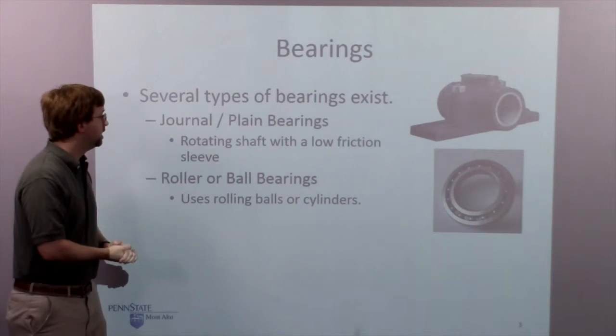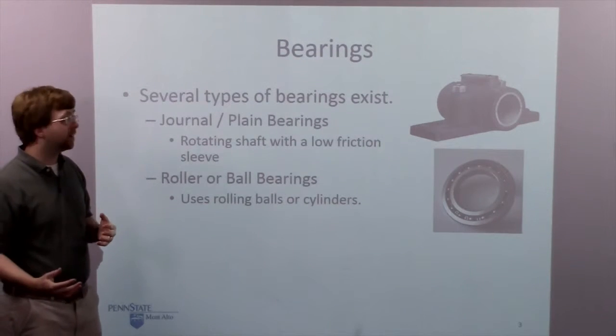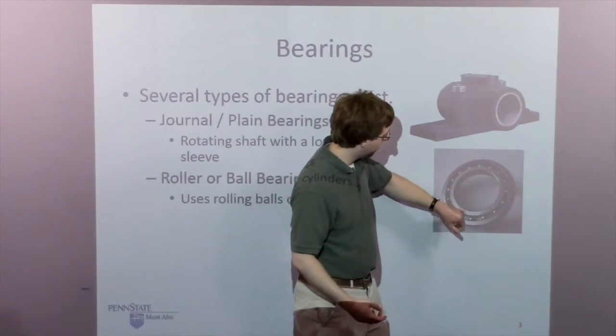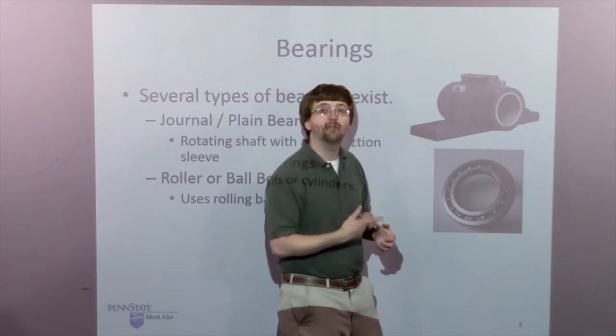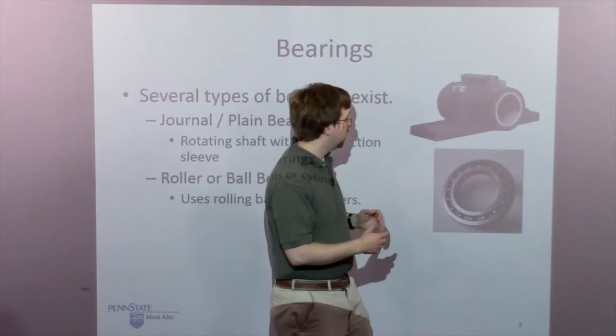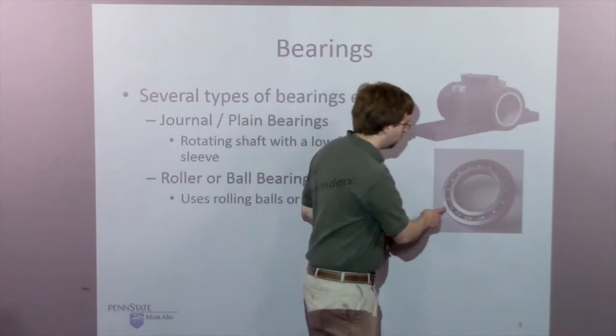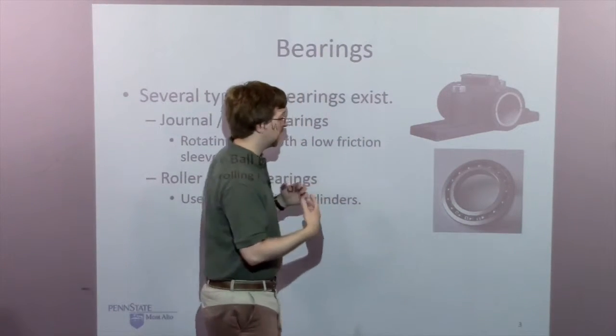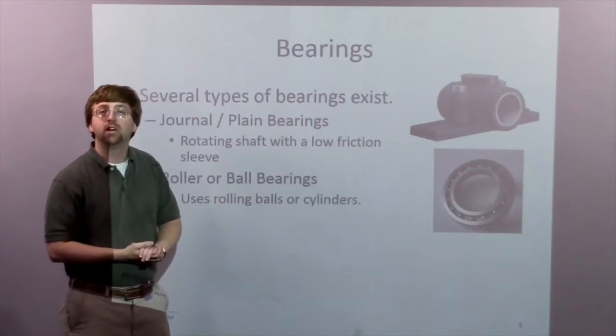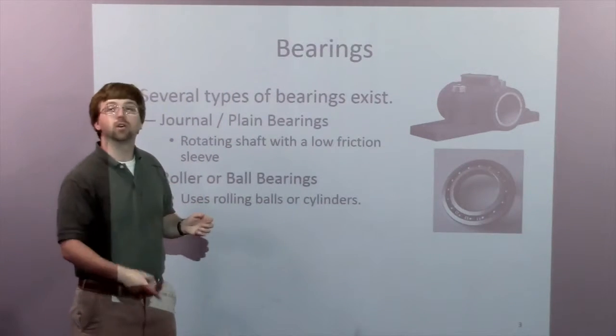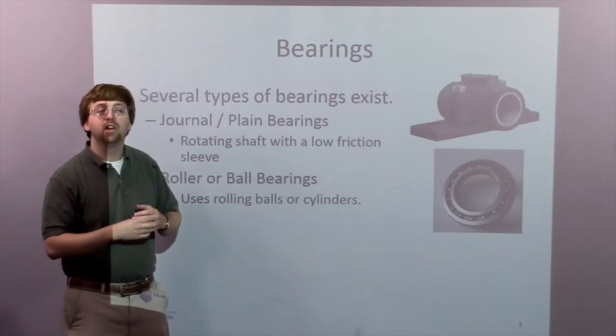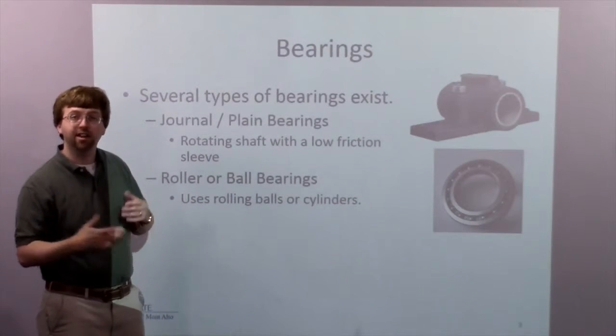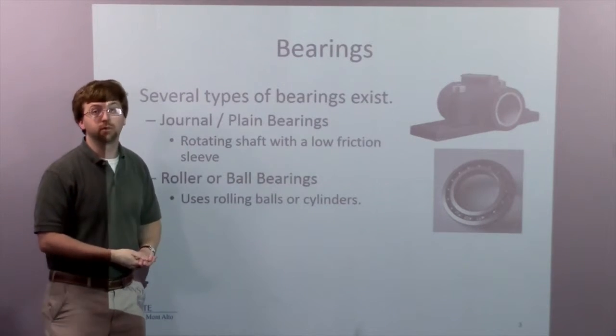The second type is a roller or ball bearing - this is the example I had from earlier. We've got the outside surface and this inside part would connect to the shaft and rotate with it. To reduce friction between those two surfaces we put ball bearings, which are just little spheres, or if we have a roller bearing we'd have cylindrical pieces. As the inner piece rotates with the shaft, those balls also rotate and reduce friction, like the wheels on a car reduce friction with the ground.